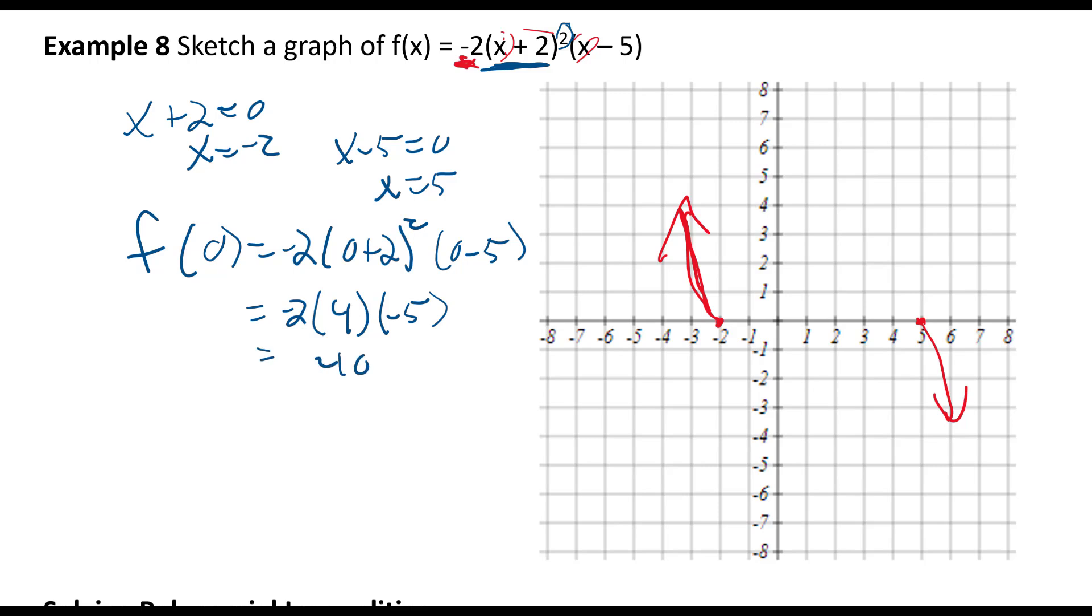Which makes sense because it's going to bounce on this -2 (I call it bouncing). It's going to come back up from the way it came, it's going to go way up there to 40 and come back down to here. So it crosses at 40.